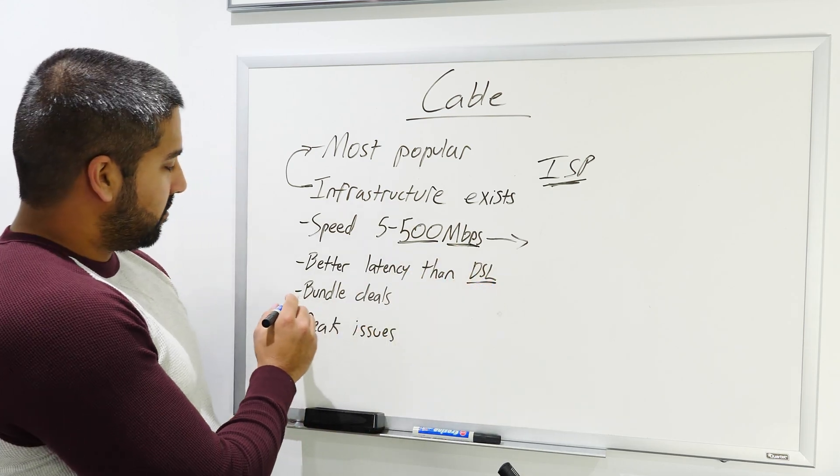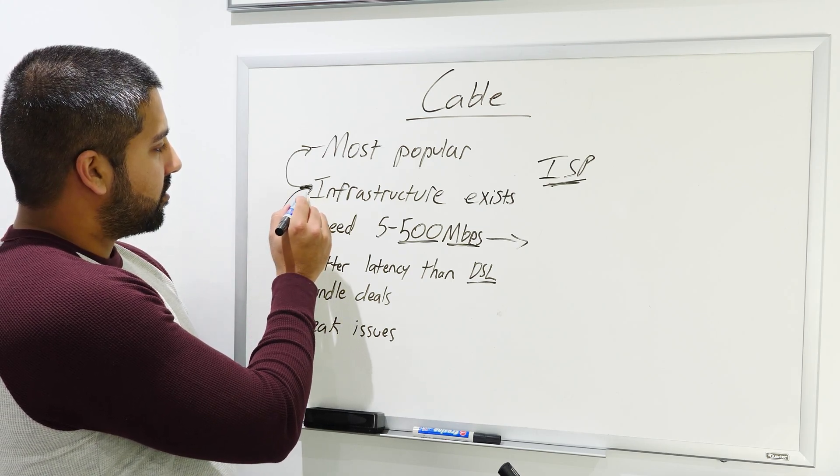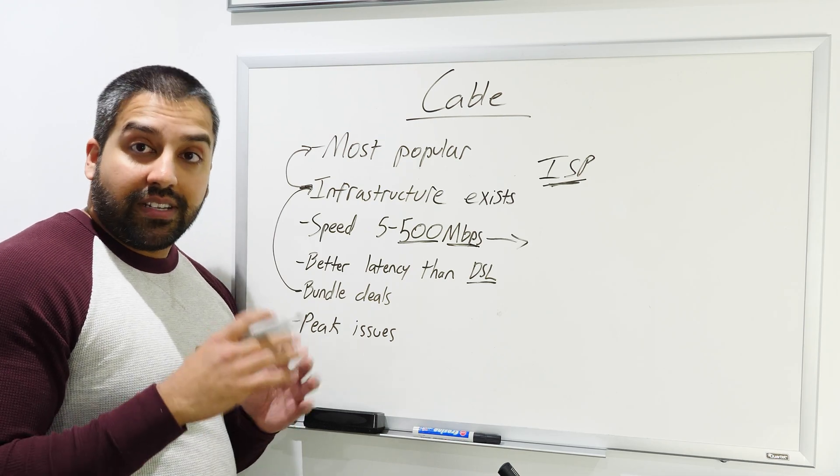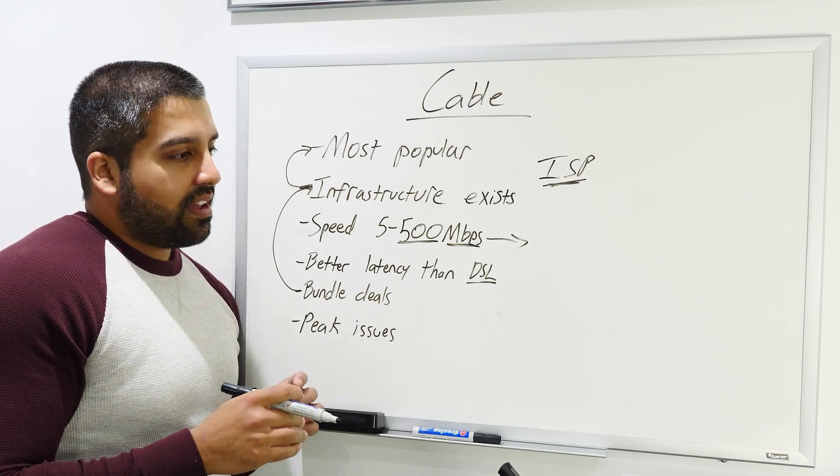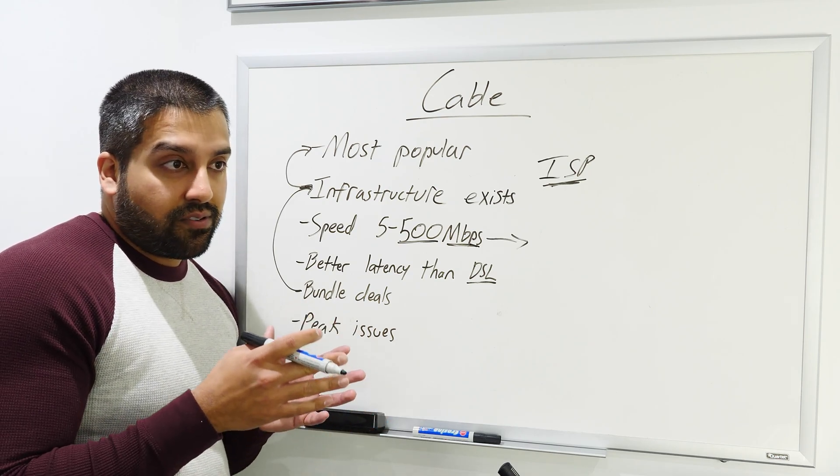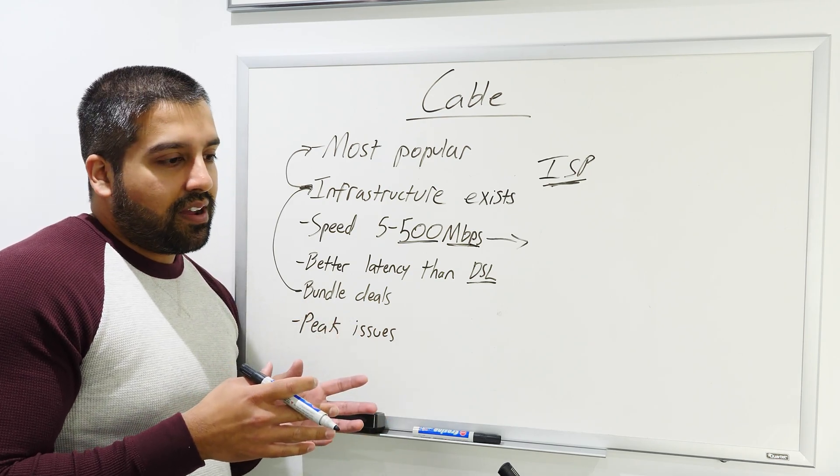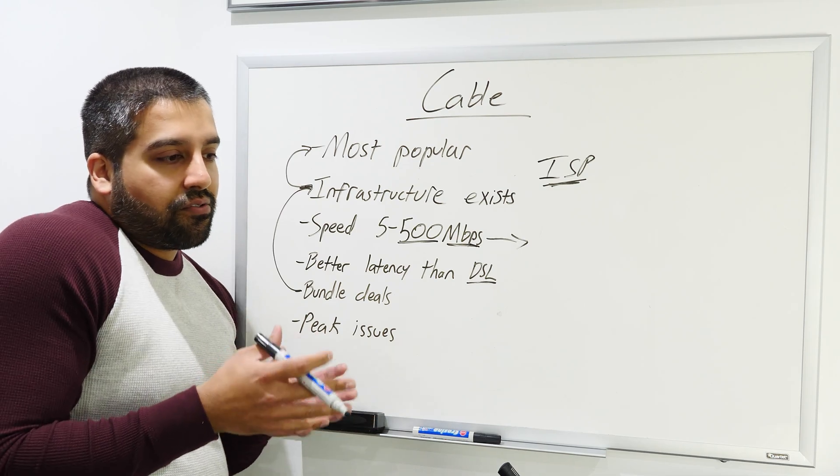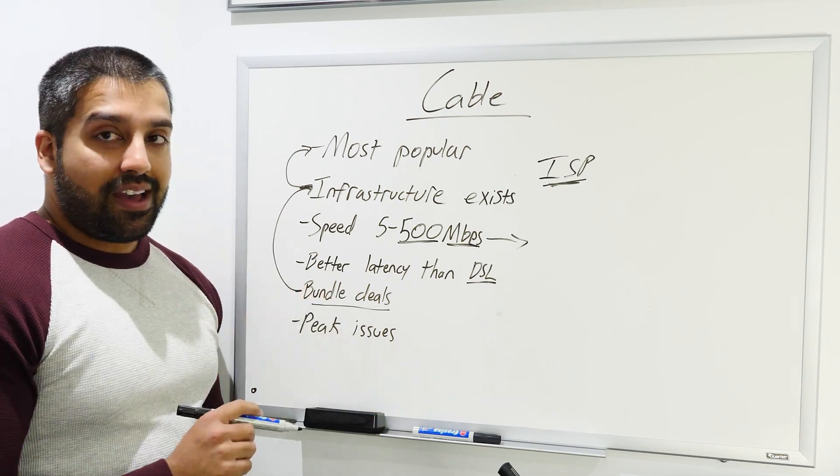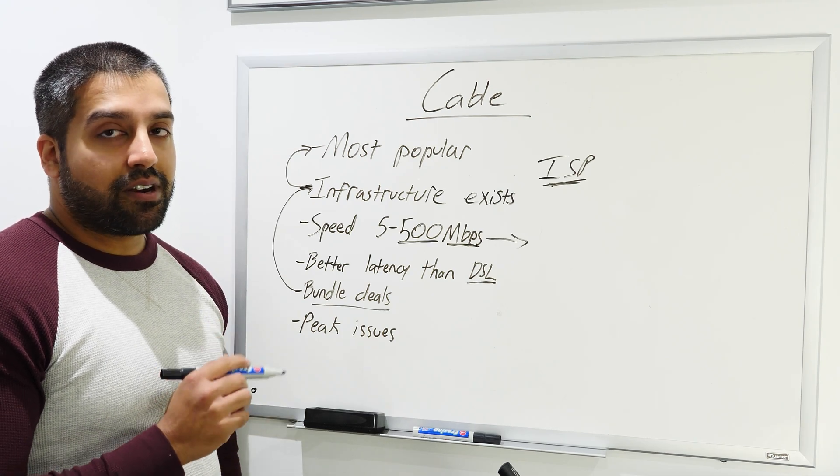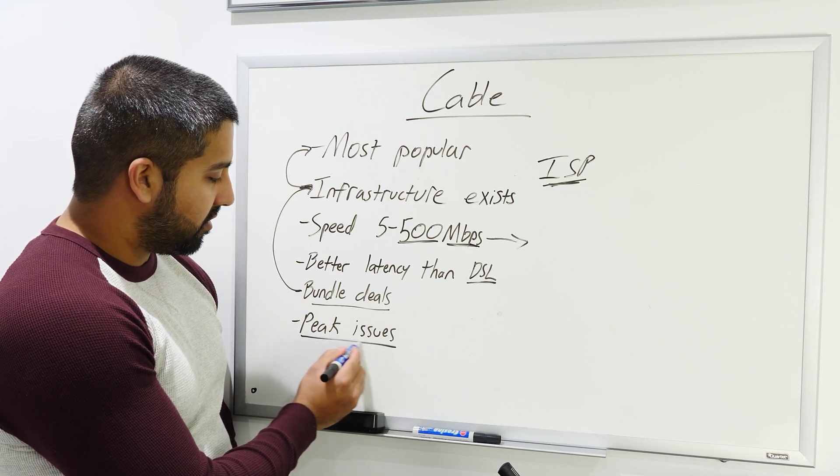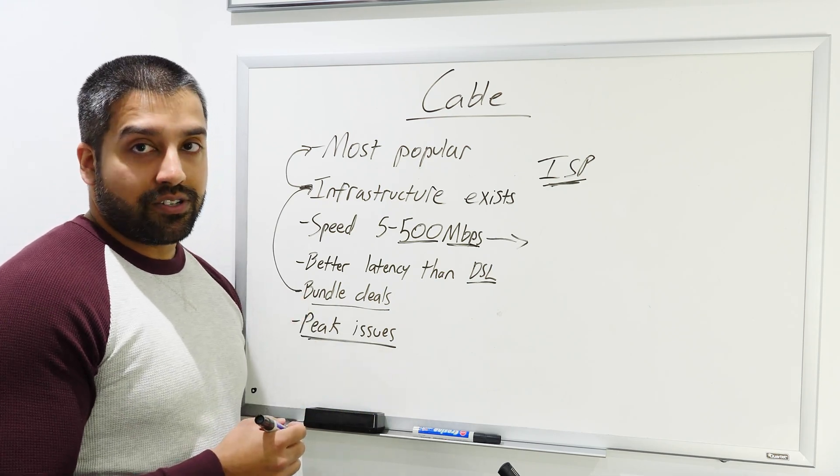They also have bundled deals. Some companies will say hey, if you buy TV service from us for 80 channels and you buy cable internet from us, we'll give you both at a bundled discount of 20% off. There is a big caveat to cable internet: peak performance issues in your neighborhood.